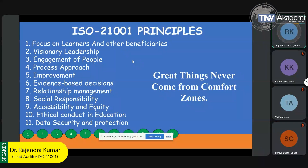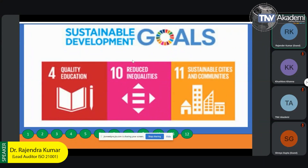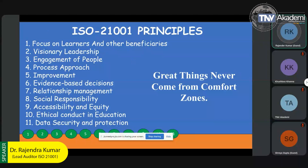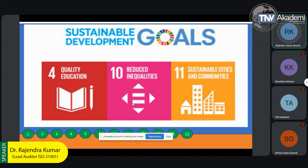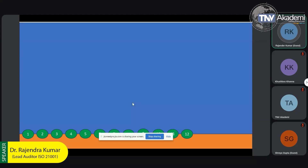ISO 21001 contributes to the UN Sustainable Development Goals: SDG 4 is quality education, SDG 10 is reduced inequalities, and SDG 11 is sustainable cities and communities. The focus on learner and other beneficiaries is directly linked with SDG 4. Principles covering equity and accessibility directly address SDG 10, and when the right kind of education is provided to students, it helps in developing communities and sustainable cities — that is SDG 11.